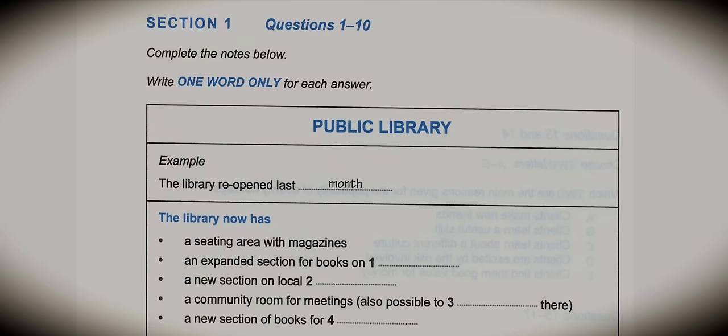Test 7. You will hear a number of different recordings and you will have to answer questions on what you hear. There will be time for you to read the instructions and questions and you will have a chance to check your work. All the recordings will be played once only. The test is in four sections. At the end of the test, you will be given 10 minutes to transfer your answers to an answer sheet.